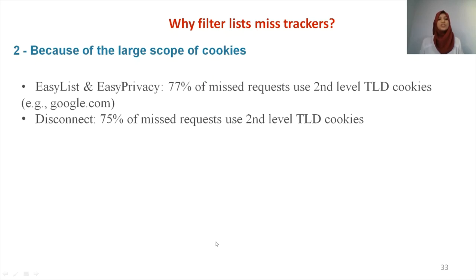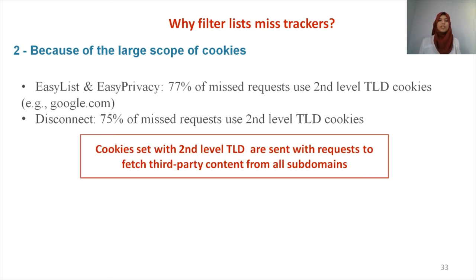The second reason is the usage of large-scope cookies. A domain can choose to set the cookie with a second-level TLD such as google.com, instead of using the full domain like searchengine.google.com. By doing so, the cookie becomes accessible to all subdomains. We found that 77% of the requests missed by EasyList and EasyPrivacy use a second-level TLD, while 75% of those missed by Disconnect use a second-level TLD cookie. In summary, cookies set with second-level TLDs are sent with requests to fetch third-party content from all subdomains, including those that serve functional content, and filter lists cannot block this kind of request because of the functionality they bring to the website.